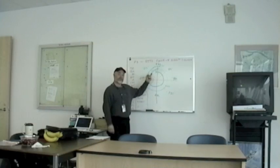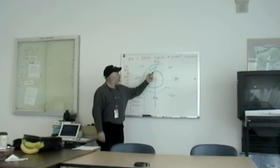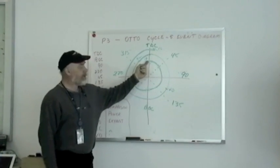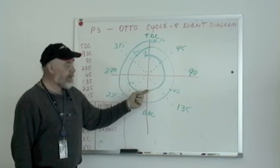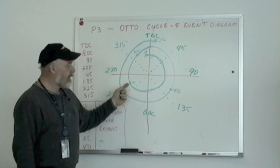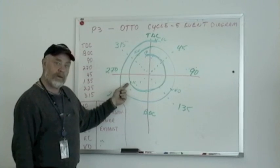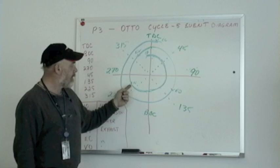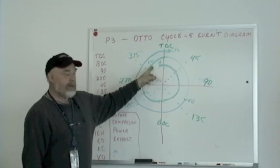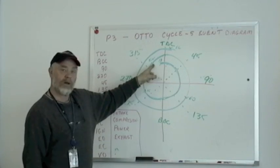The intake valve is open for 10 degrees before top dead center, remains open for 180 degrees, and then another 60 degrees — so the intake valve is open for 250 degrees total. The ignition happens 30 degrees before top dead center and completes one degree after top dead center.